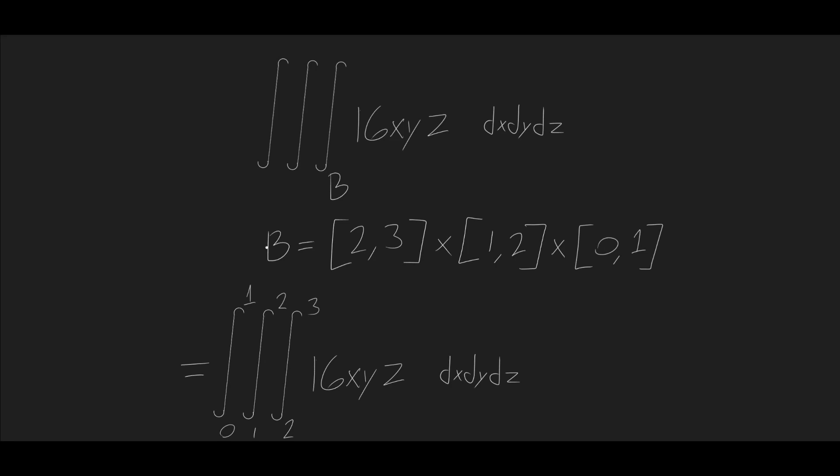Let's go ahead and look at an example. We want to find the triple integral over b of 16x times y times z, dx, dy, dz. Where b is [2, 3] times [1, 2] times [0, 1].